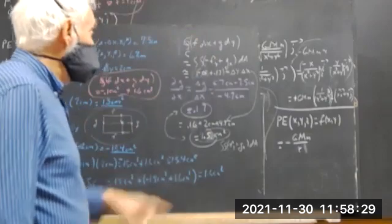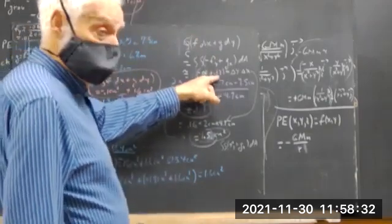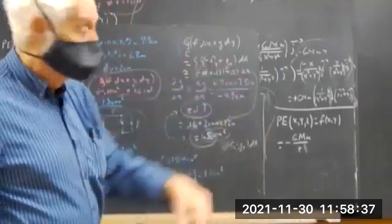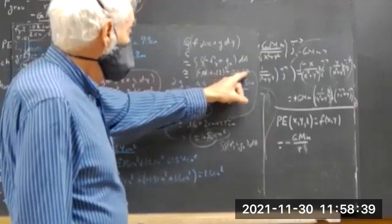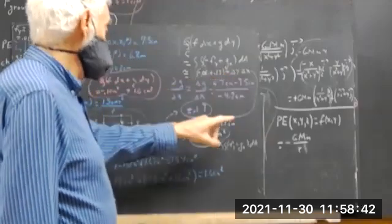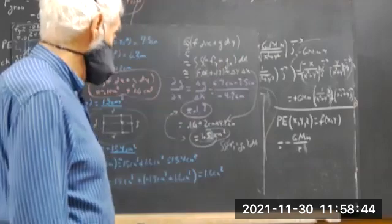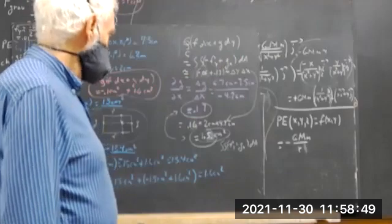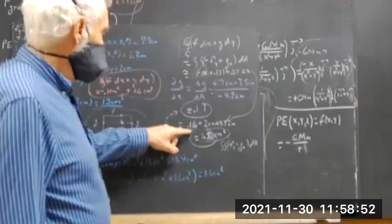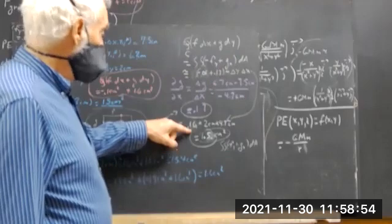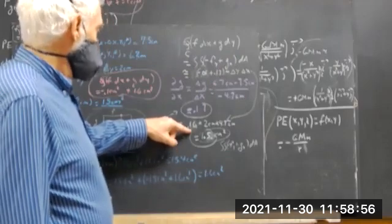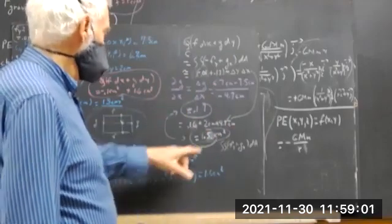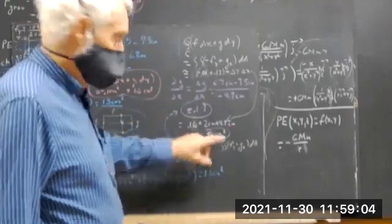You add those up, you get 0.16. That's your negative Fy plus Gx. The unit was times your delta y times delta x. Delta y is 2 centimeters, delta x is 4.7 centimeters. Then you multiply this out, you get 9.4 centimeters. Nine times 0.16 is 1.44, and you still have that 0.4 centimeters, which gets you up to about 1.5 centimeters squared.